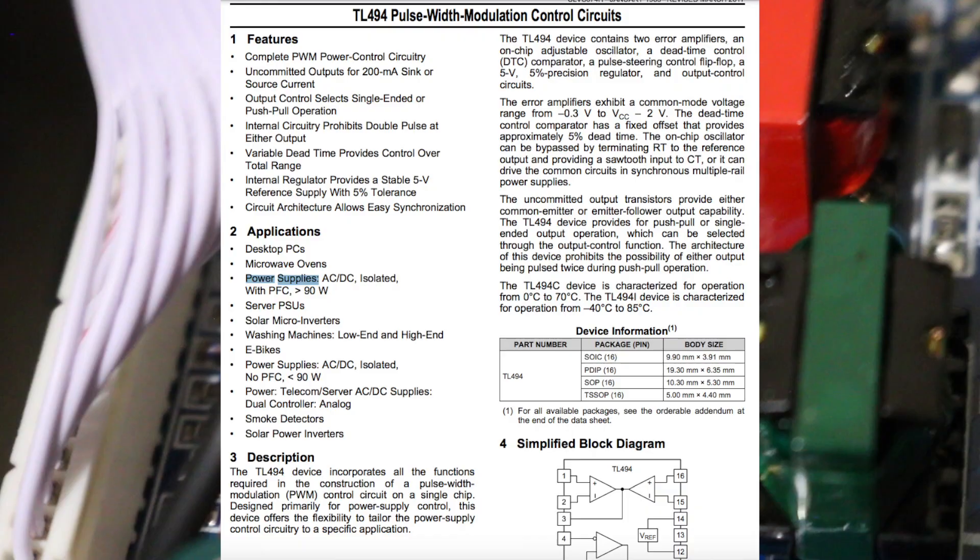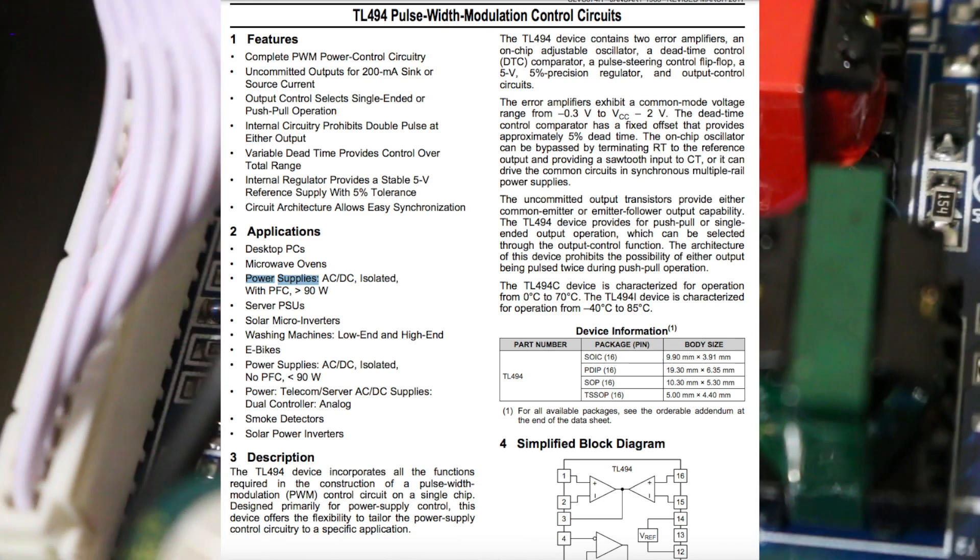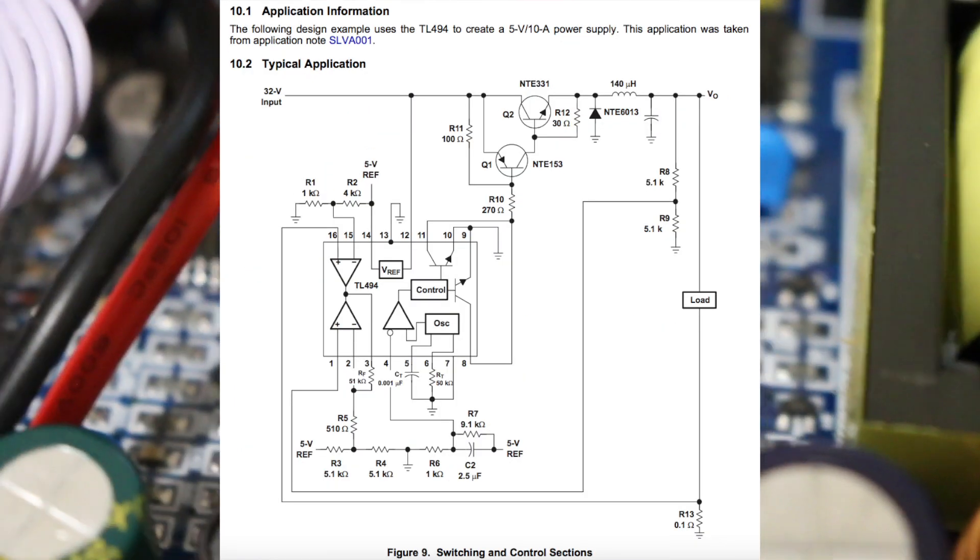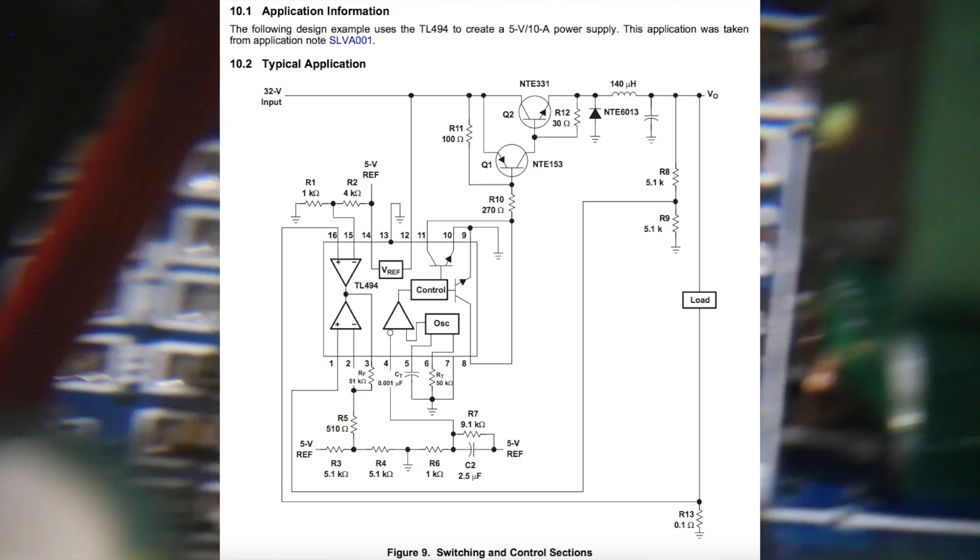Looking on the control part of the PCB, there's an IC, TL494 pulse width modulation control circuit. So this is for PWM power control circuitry including power supplies.